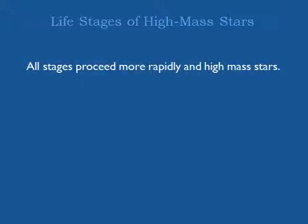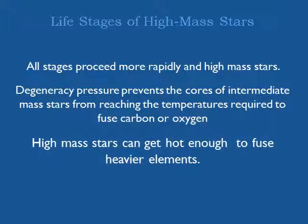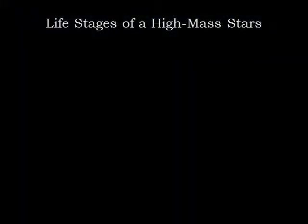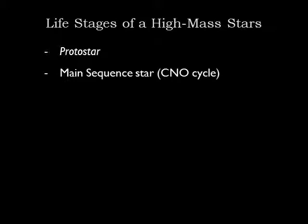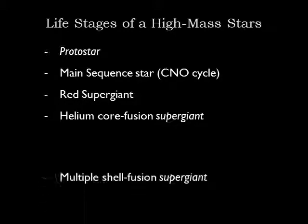All life stages proceed more rapidly in high-mass stars. However, degeneracy pressure prevents intermediate-mass stars from reaching the temperatures required to fuse carbon or oxygen, whereas high-mass stars can get hot enough to fuse heavier elements. To summarize: a high-mass star goes from protostar to hot main-sequence star, fusing hydrogen into helium via the CNO cycle. When hydrogen runs out, the star becomes a red supergiant. After the core runs out of helium, it shrinks and heats up, allowing the star to fuse carbon and even heavier elements, sustaining multiple-shell fusion.